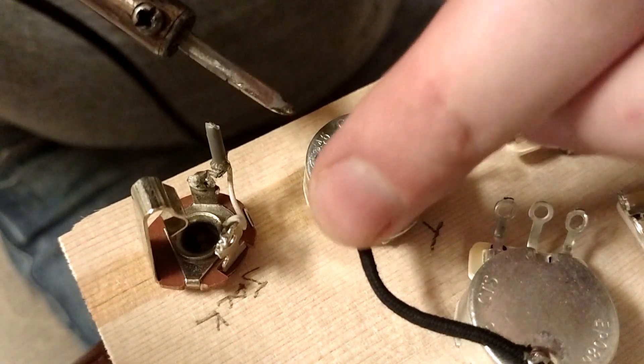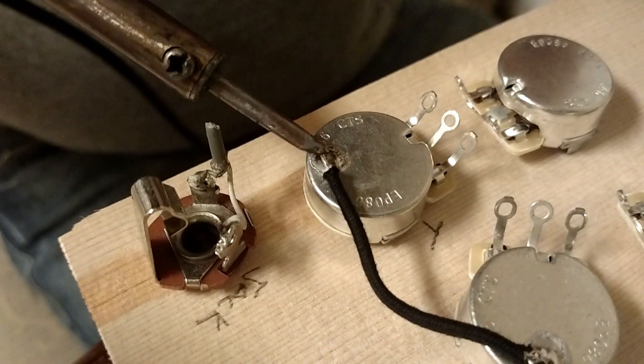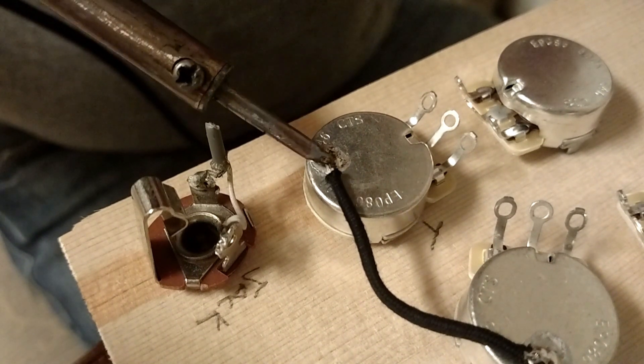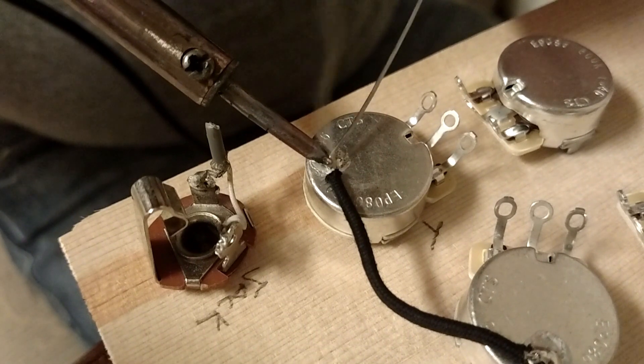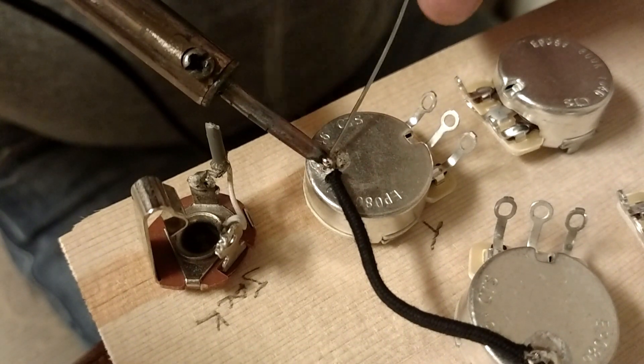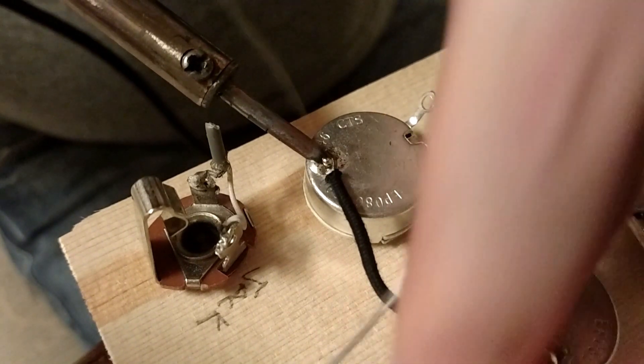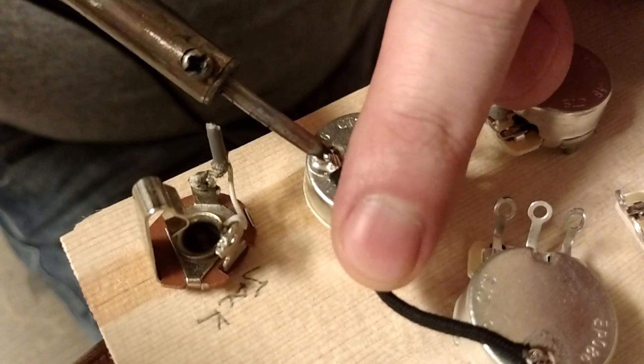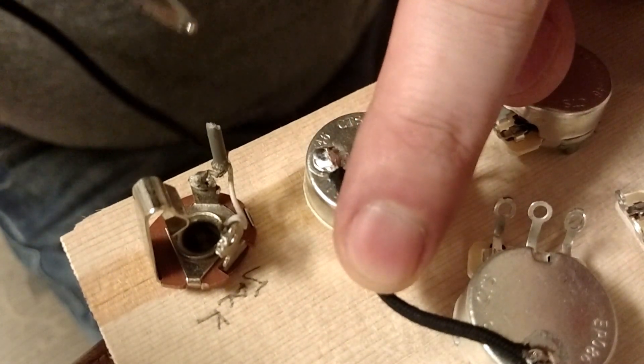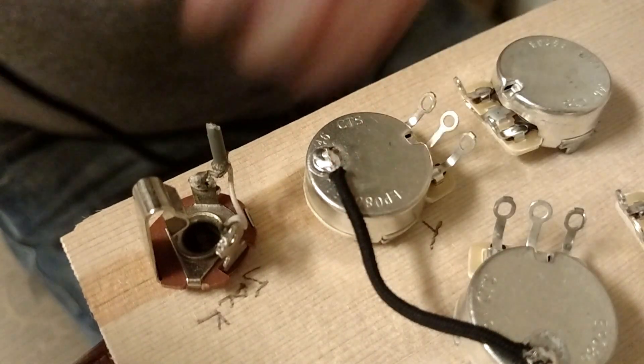Alright, so now, oh, my finger's in the way, sorry. I'm going to apply the iron where I want it, right there on top of the wire. Add a little bit more solder. Just kind of wait for that little ball. Let it dry.